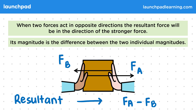If the forces are the same, the resultant force is zero, so there's no motion and the box doesn't move. At GCSE, you won't be expected to find the resultant force if it's not in the same direction as one of the given forces.